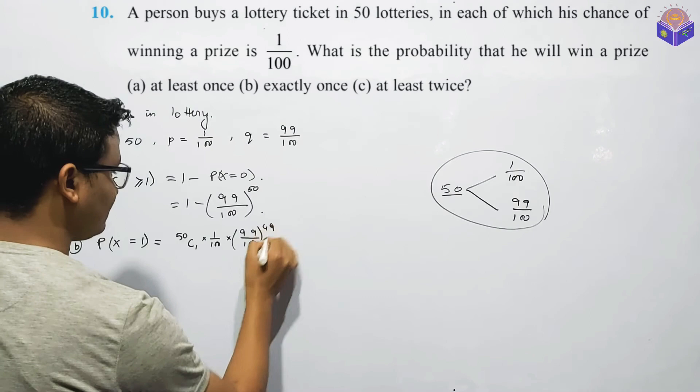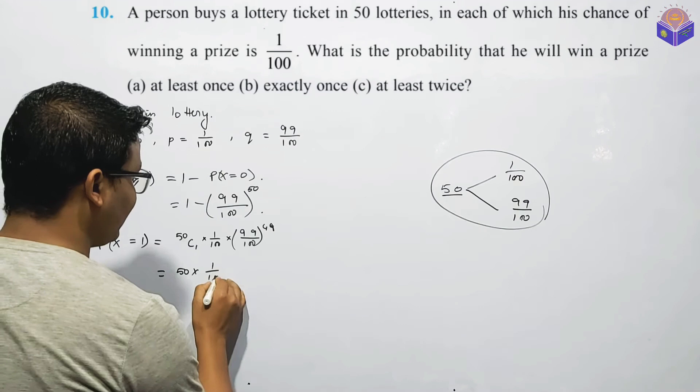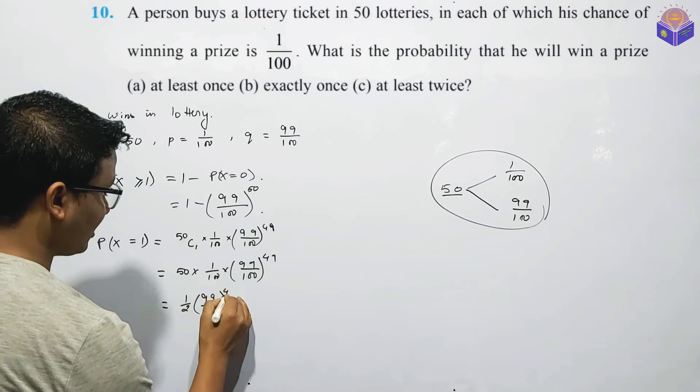So you can get to 50. 50C1 is 50. Then 1 by 100 into 99 upon 100. You can get to the power of 50. So this is 1 by 100 — 99 by 100, all to the power of 49. So this is the power of 49.